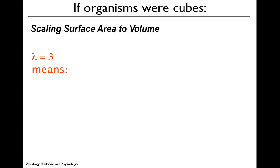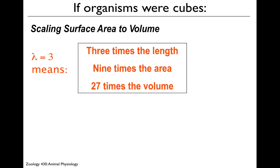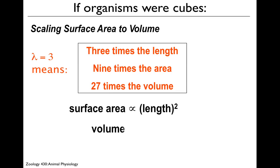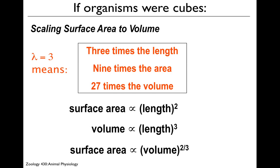If organisms were cubes, tripling the length gives you nine times the surface area and 27 times the volume — because surface area is proportional to length squared and volume is proportional to length cubed. Therefore, surface area is proportional to volume to the two-thirds power, meaning surface area increases slower than volume. These are the relationships we expect based on isometry, and the surface area to volume ratio has a huge effect on many physiological functions as animals get larger, particularly heat loss and diffusion.